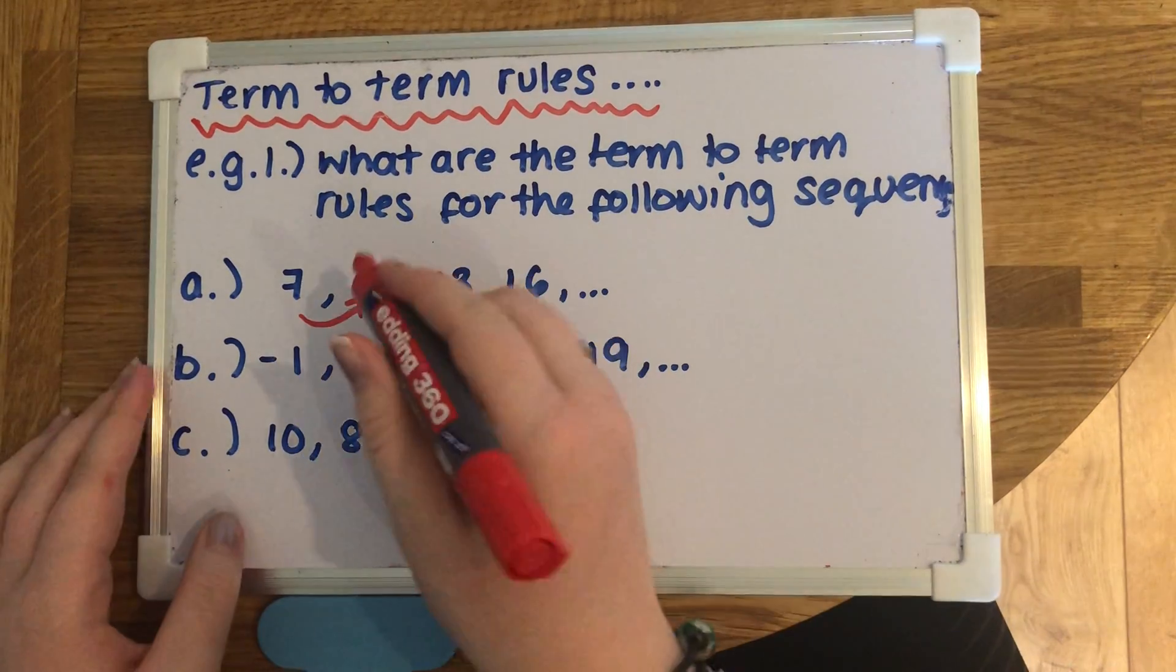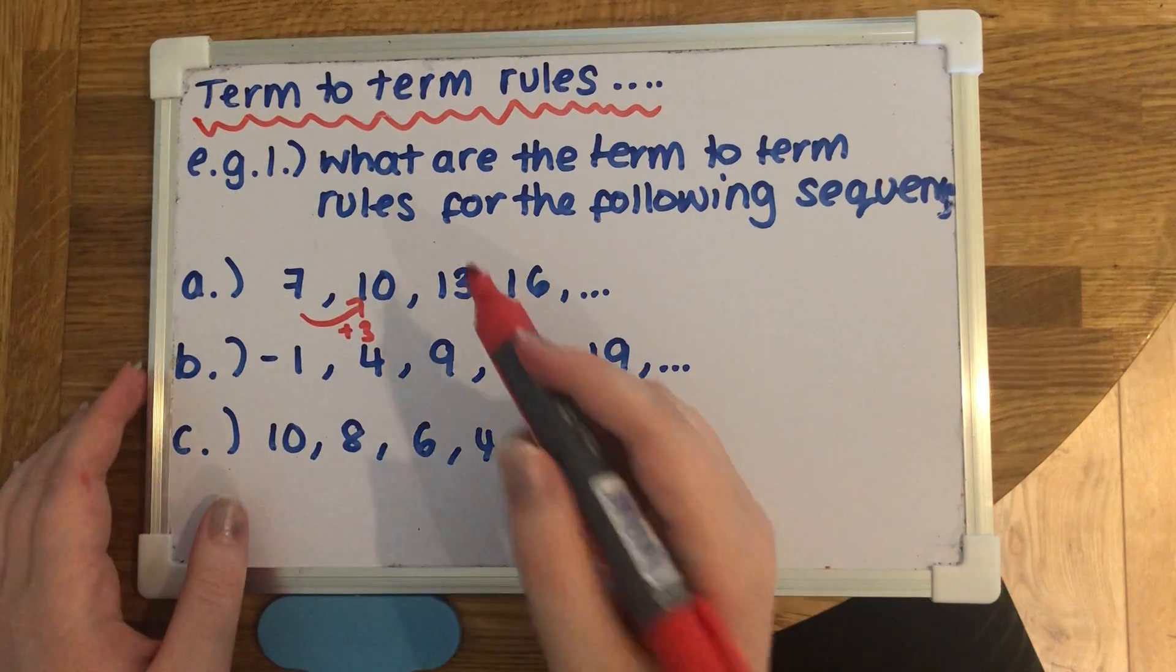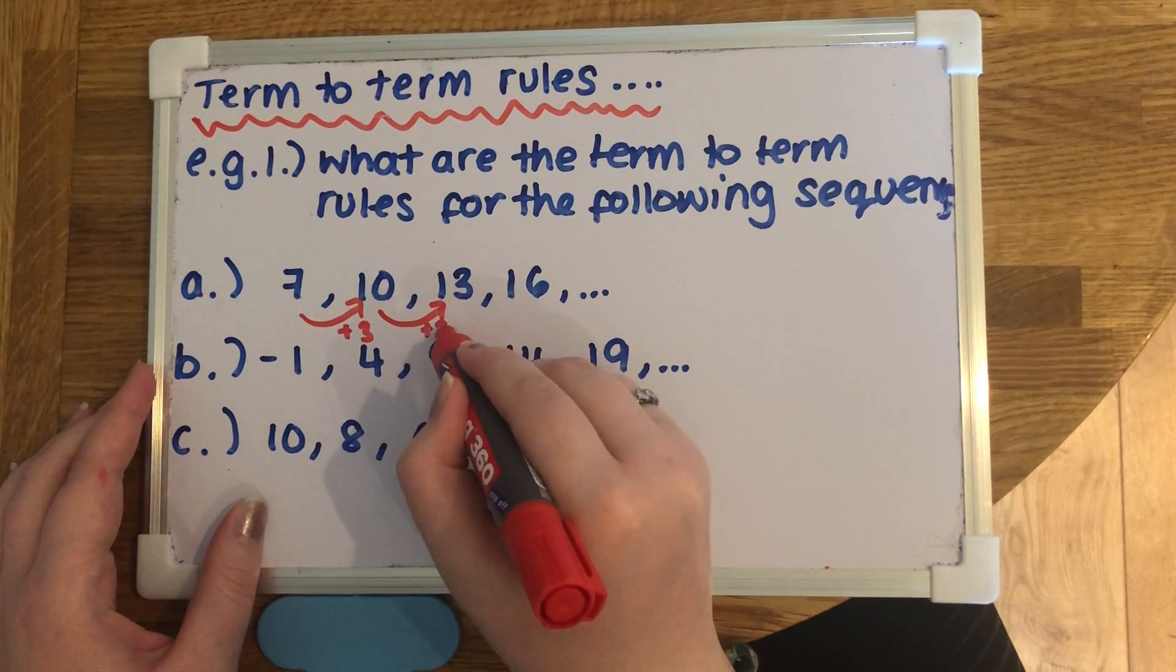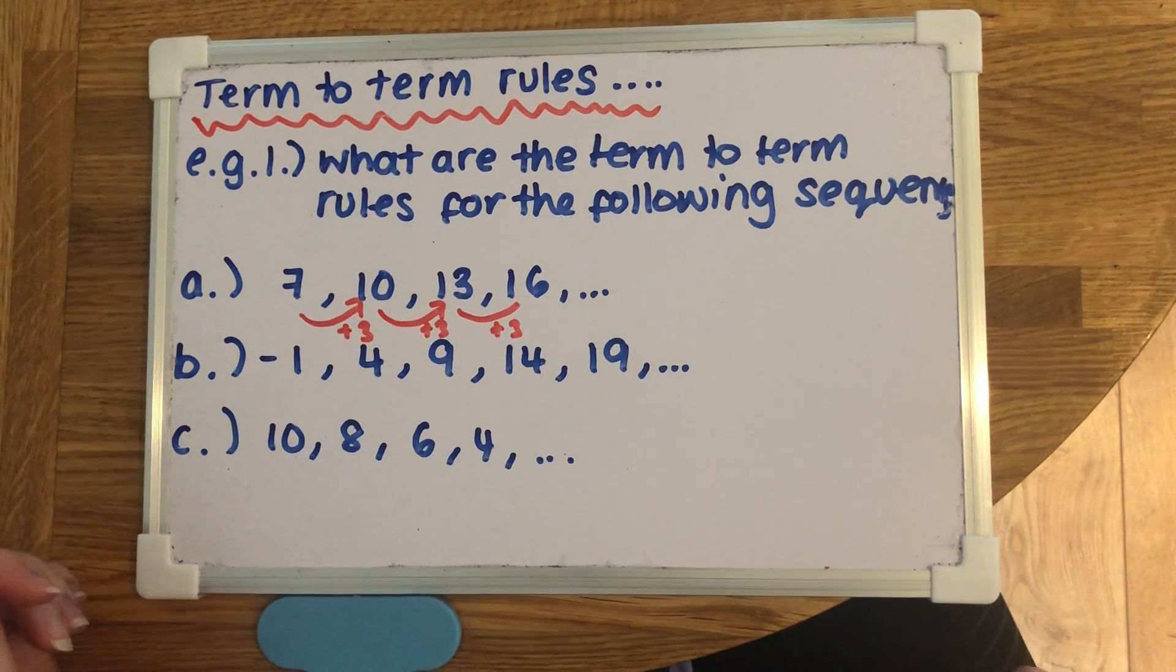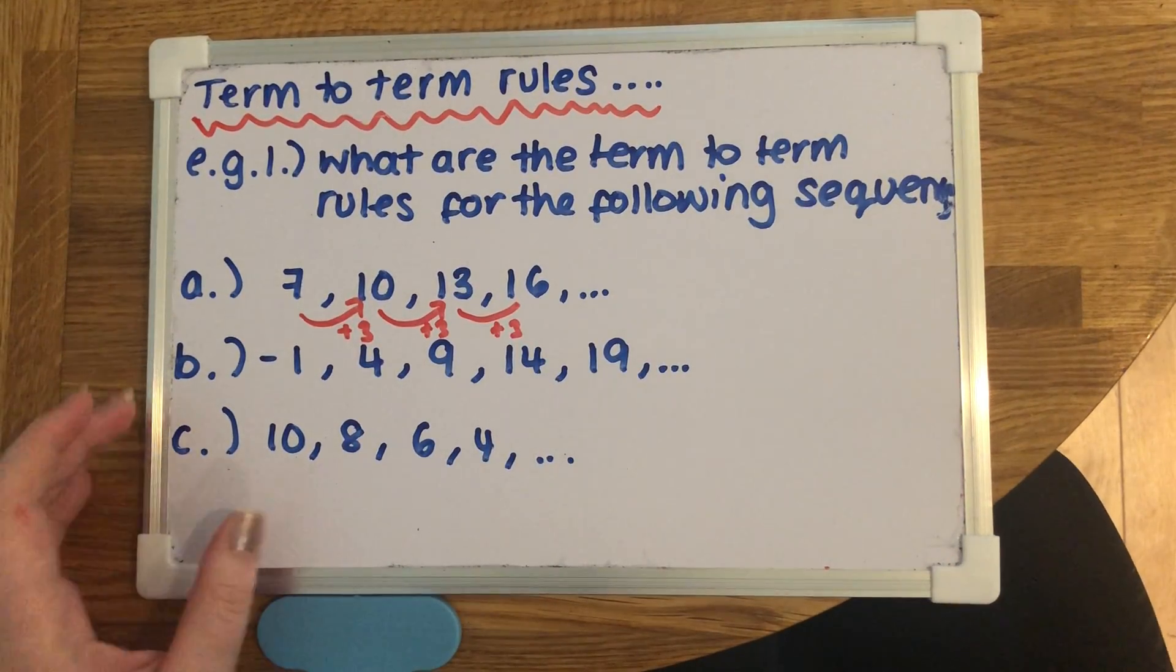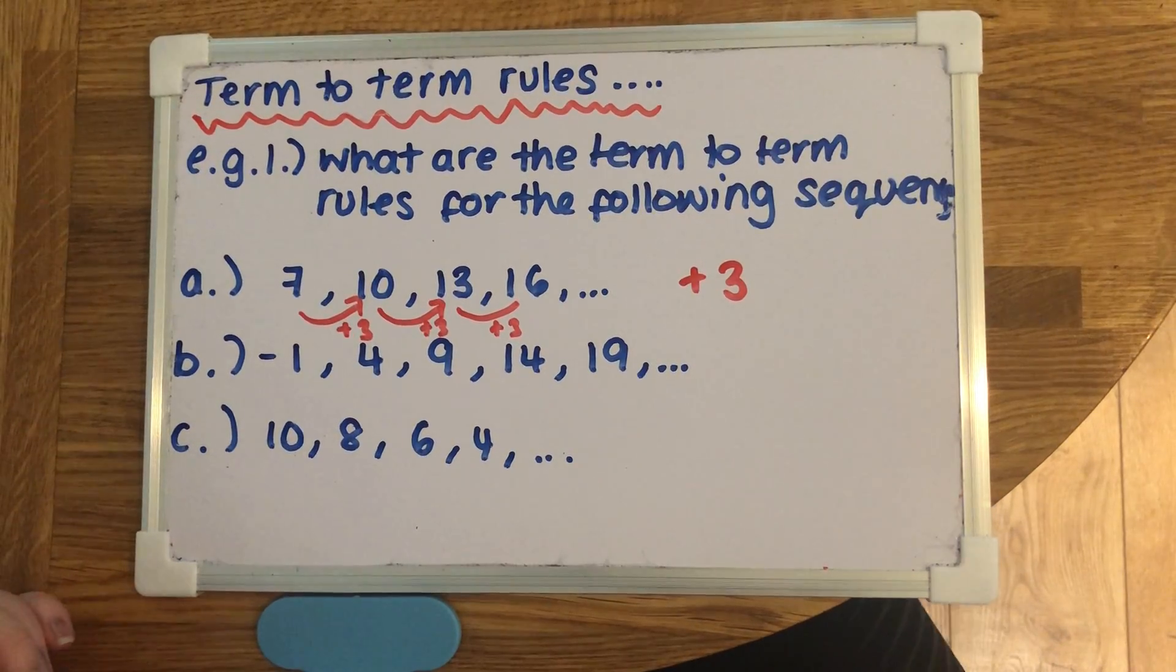If we check that for the rest of them, to get from 10 to 13, yep, we would add 3, and the same from 13 to 16. So the term to term rule would be that you're adding 3 each time. That's all you'd have to say: add 3.